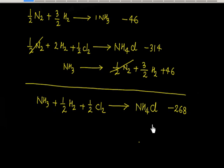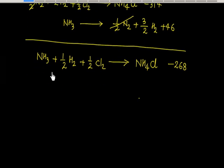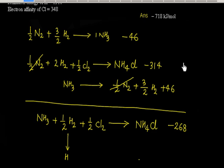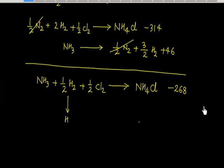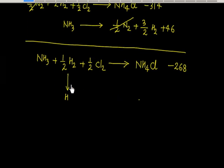Now I can think of this same reaction in Born-Haber cycle terms. From the Born-Haber cycle, H2 dissociates to give H atoms. Per mole of H2, we need to give 218 kJ per mole of energy. But since I need only half a mole, I need 109 kJ for this process.